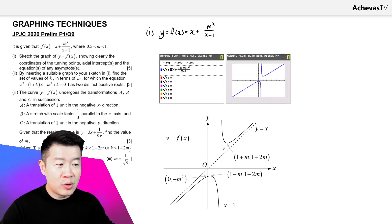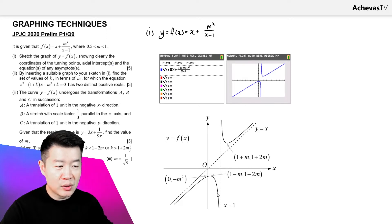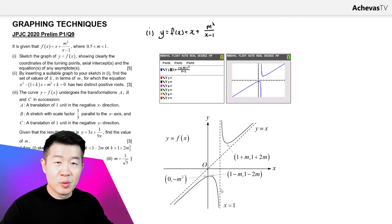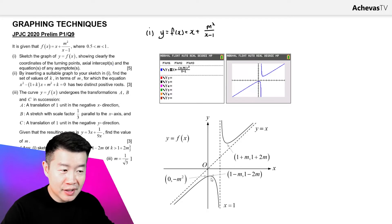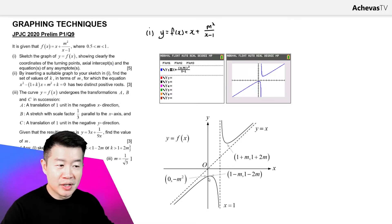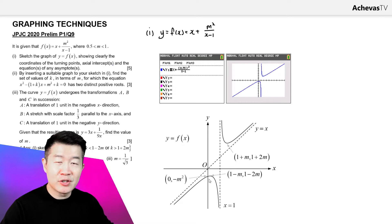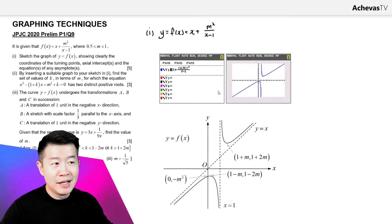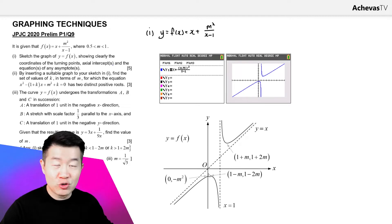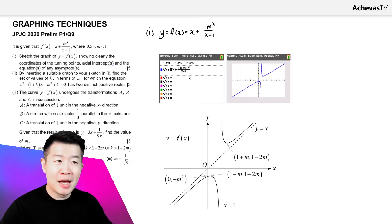Now we have our asymptotes and the rough shape of the graph to fill into our solution. However, our solution will be lacking three key features: the y-intercept and the two stationary points. We need to find these algebraically, since our calculator used m = 0.75 rather than the general m.